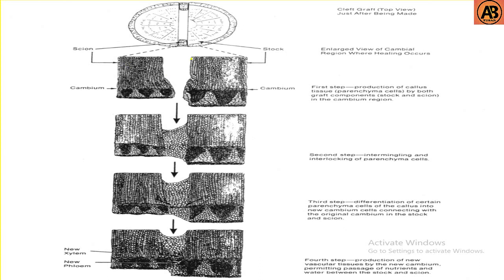In the picture we can see a cleft grafting — this is the scion part and this is the rootstock part. In the zoom view, the first step is the production of callus tissue by parenchyma cells from both graft components — stock and scion — in the cambium region.